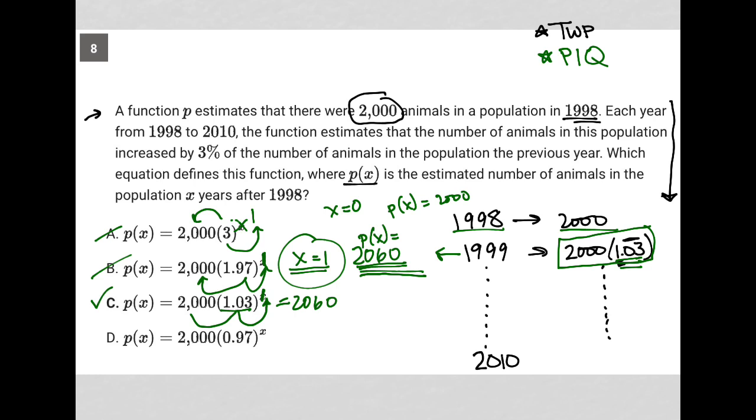So I'm thinking that choice C is correct. And then just to make sure, I look at choice D, and it has a 0.97 to the first power times that 2,000, which I know will not equal 2,060. So choice C is the best answer.